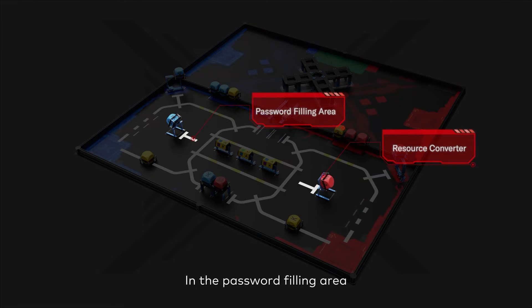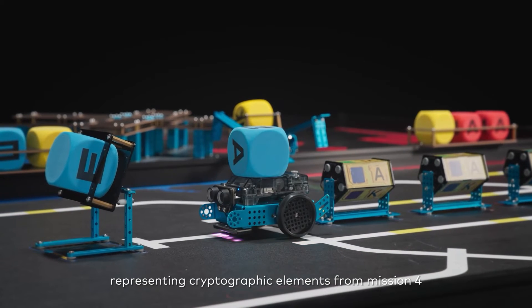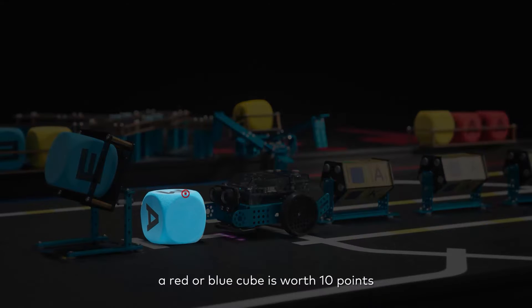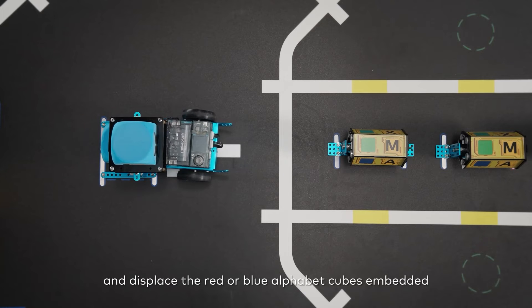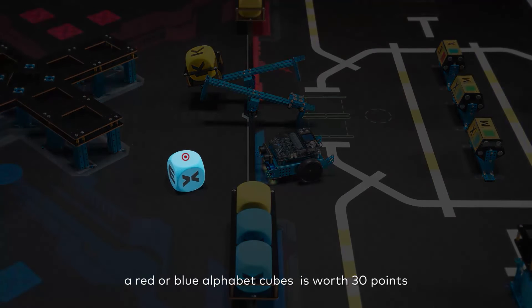In the password filling area, transfer alphabet cubes M or X representing cryptographic elements from Mission 4 to the password checking area. A red or blue cube is worth 10 points. Displace the red-blue alphabet cubes embedded in the resource converter and transfer them to the manual area. A red or blue alphabet cube is worth 30 points.